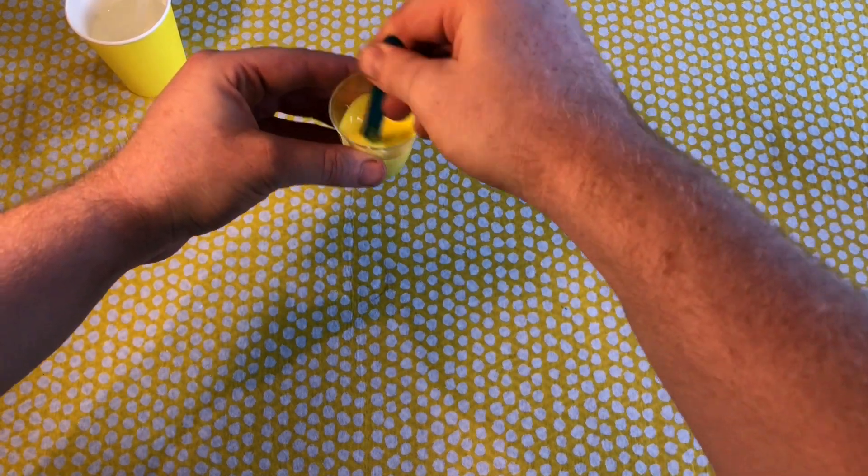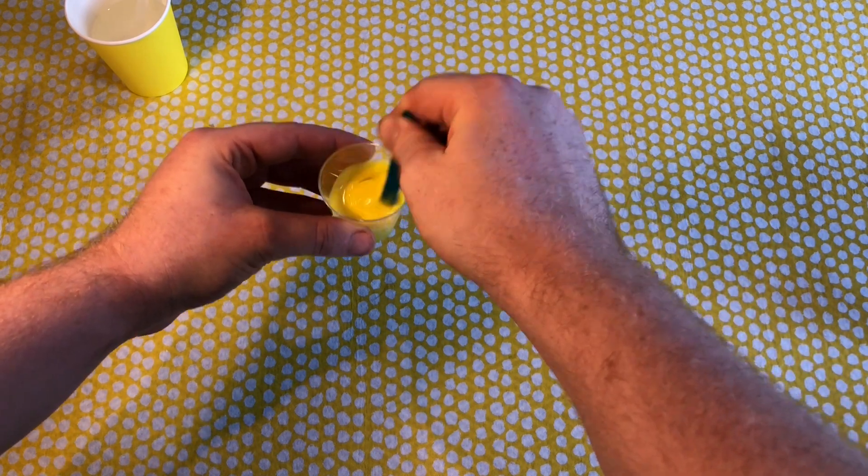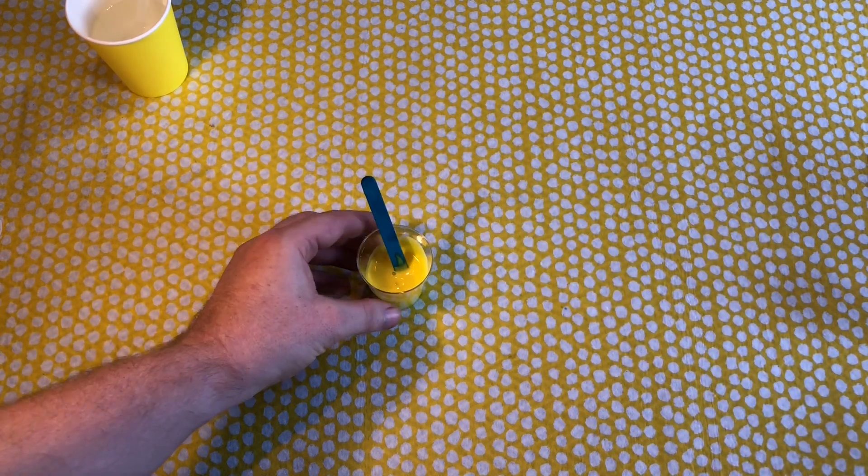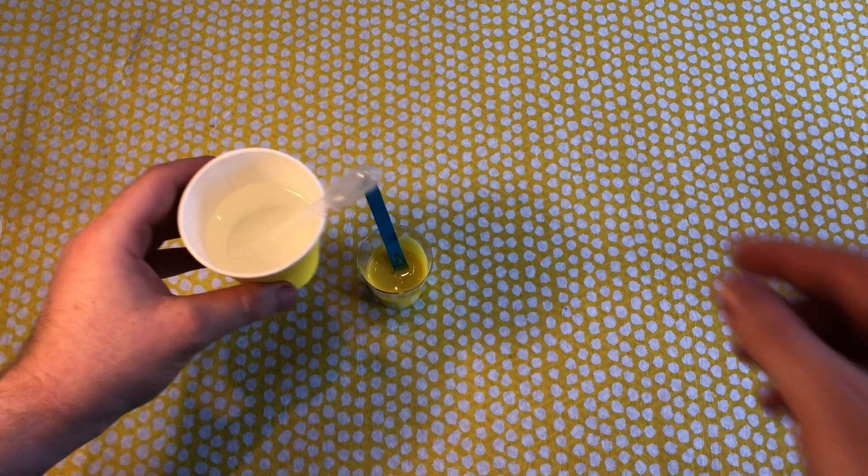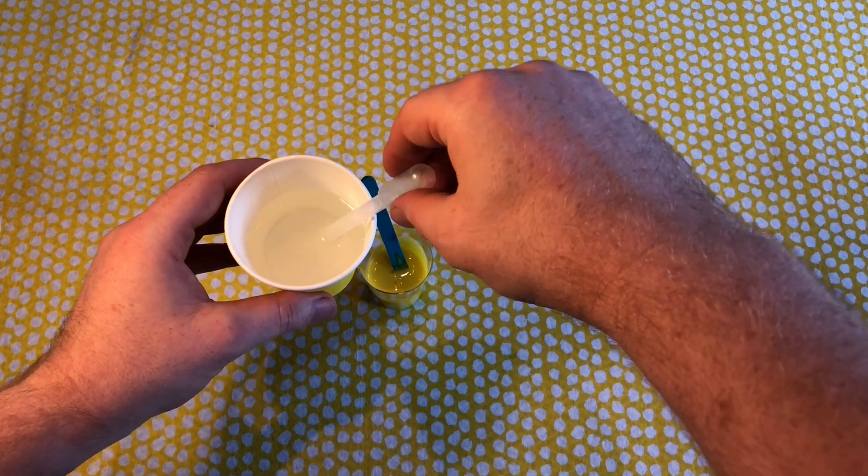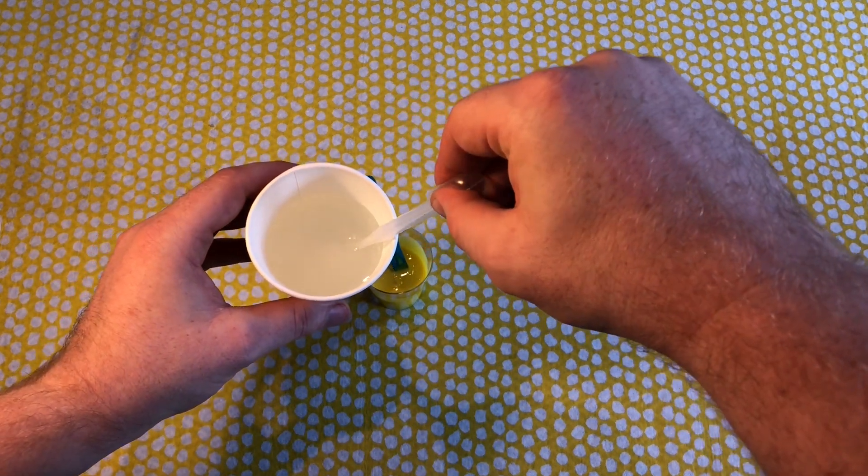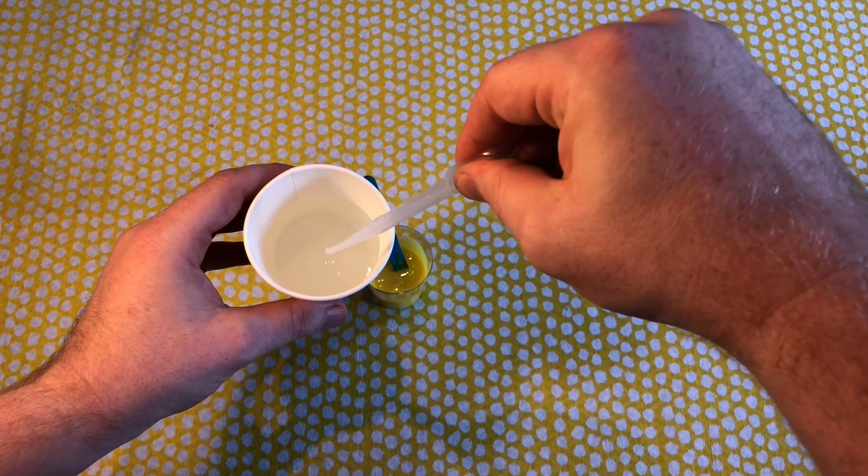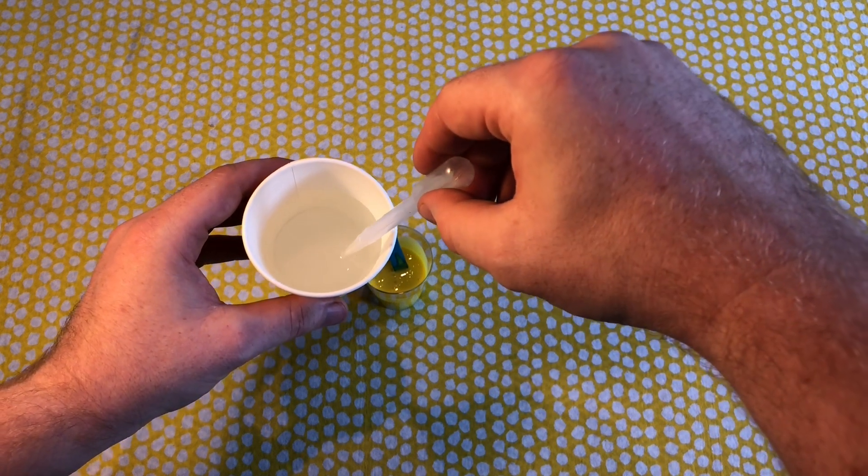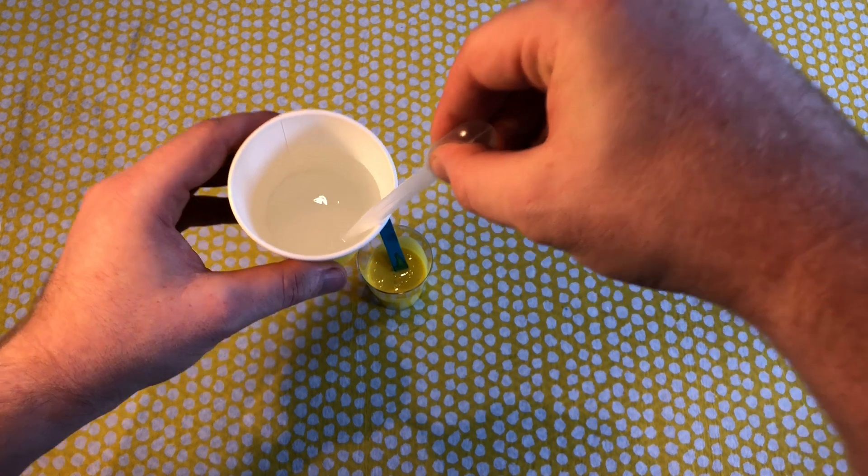Give it a quick stir to make sure the PVA glue, water, and paint are all mixed together. Now use your cup filled with the borax liquid. With your pipette inside, if you squeeze it you should see bubbles come out, and when you let go you should see liquid go into your pipette.